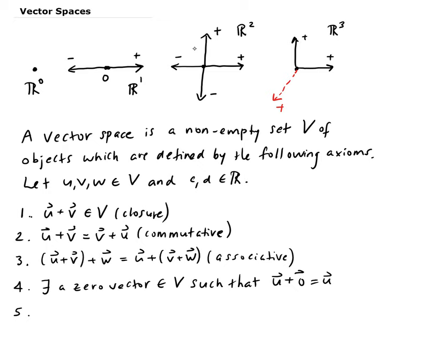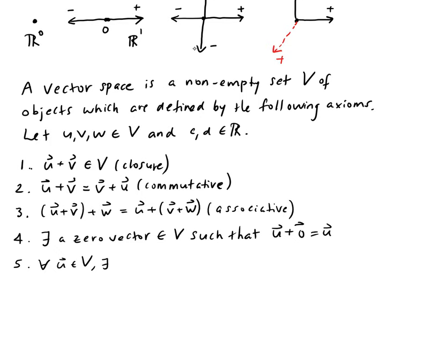Fifth, for all u in the vector space, there exists a vector minus u that also has to be in the vector space, such that u plus minus u is equal to the zero vector. Without five, we can't have four. Both four and five work together.